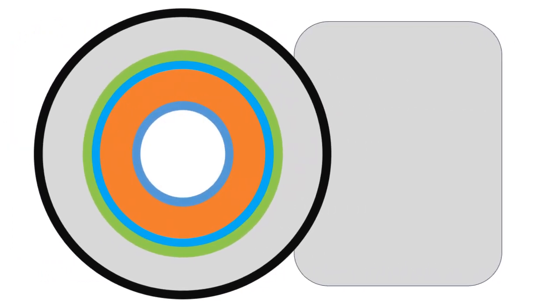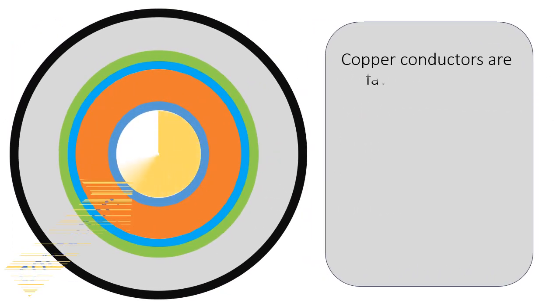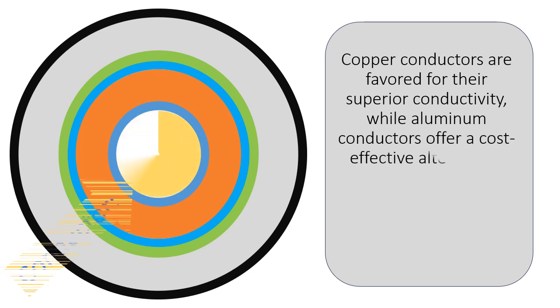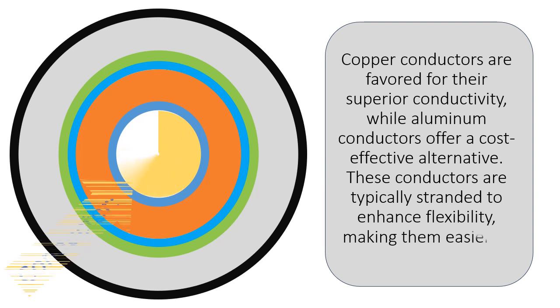Copper conductors are favored for their superior conductivity, while aluminum conductors offer a cost-effective alternative. These conductors are typically stranded to enhance flexibility, making them easier to handle and install.